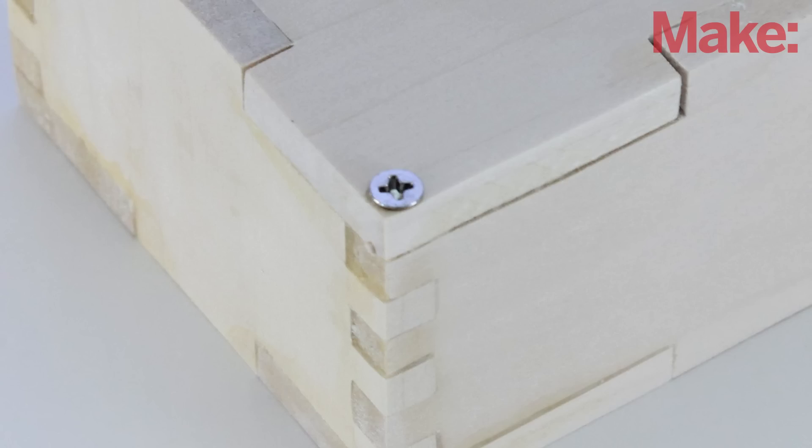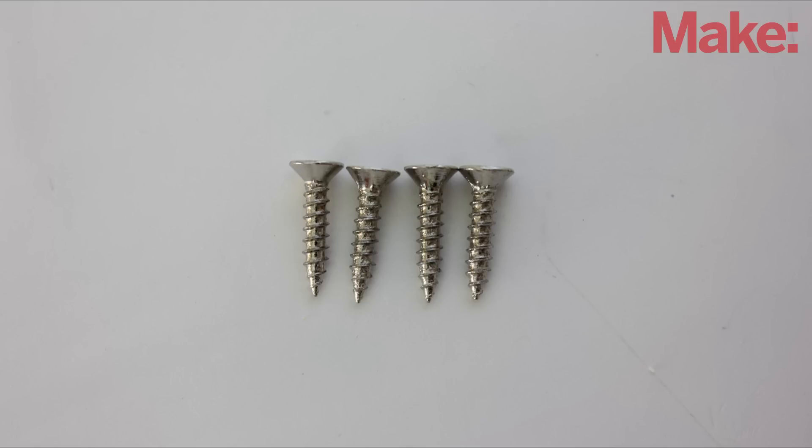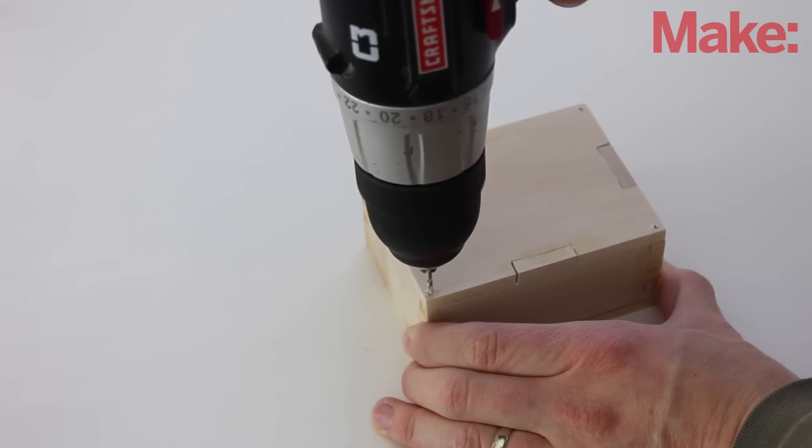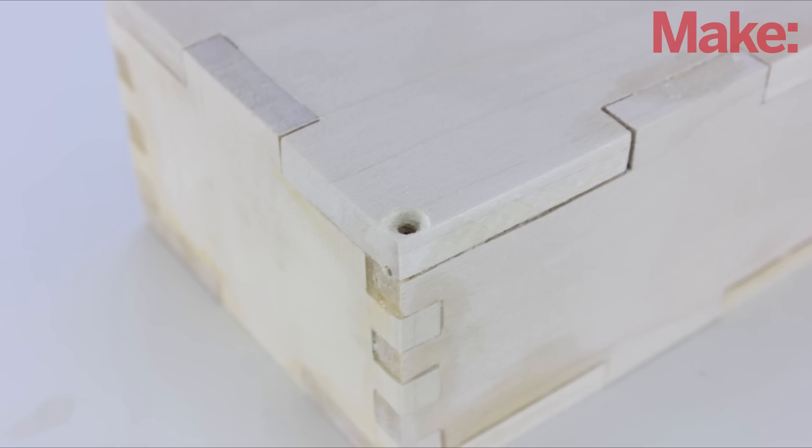The last step is to add screws that will hold the lid in place. First, find some small wood screws. Then, using a drill bit that's a little smaller than the screws, drill a pilot hole in each corner. Lastly, I countersunk each hole so that the screws would sit flush with the top of the lid.